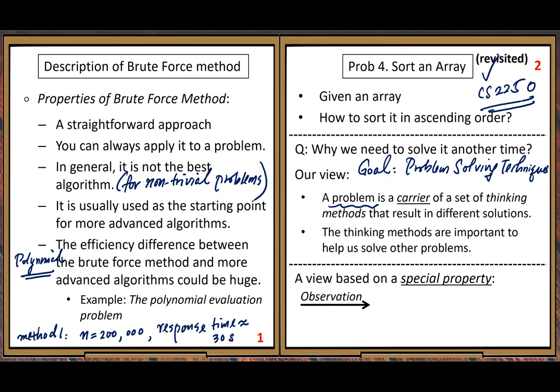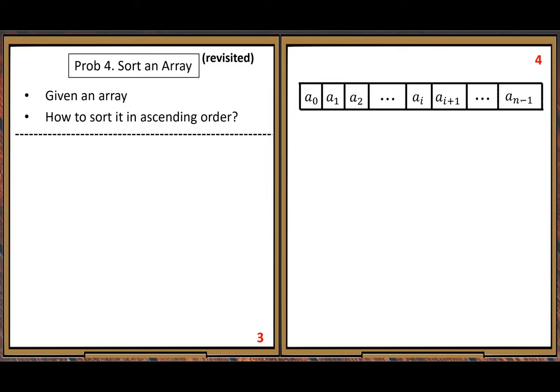First, we need to find some special property through observation. You need to really do good observation on your current computing problem and try to discover some special property. Then your solution should take advantage of this property. You may find many different properties, but for one solution we want to focus on one special property.